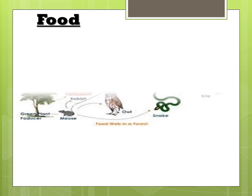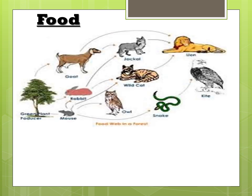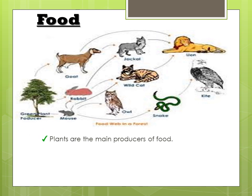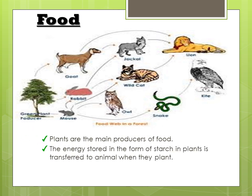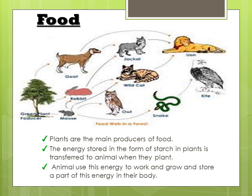Considering food, plants are the main producers of food. The energy stored in the form of starch in the plants is transferred to the animals when they eat plants. Animals use this energy to work and grow, and store a part of this energy in their bodies.